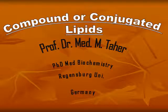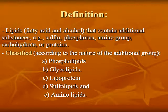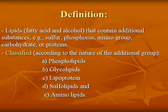Assalamu alaikum. Our lecture today is on compound or conjugated lipids. Definition: conjugated lipids is an ester of fatty acid and alcohol, in addition to another substance such as sulfur, phosphorus, amino group, carbohydrate, or protein.